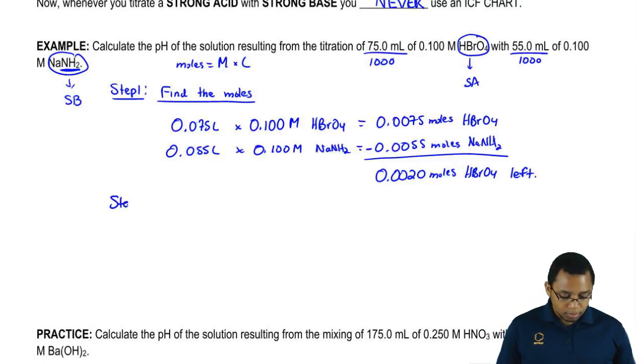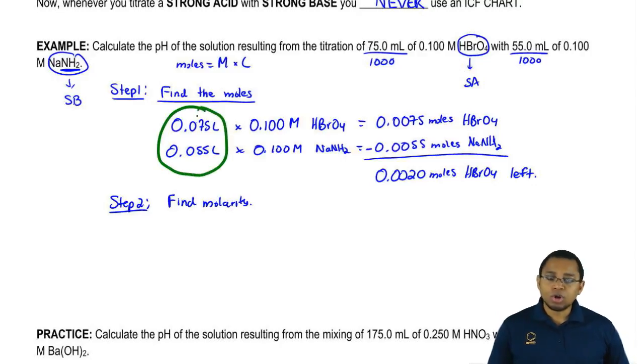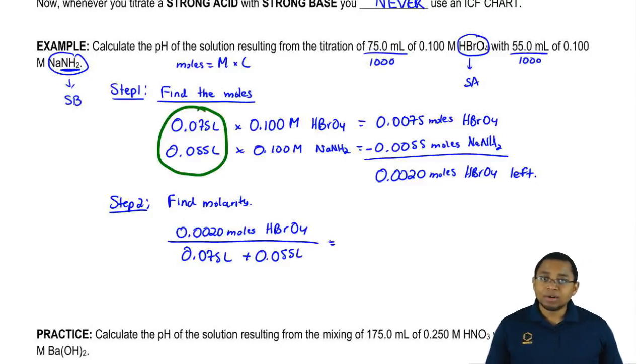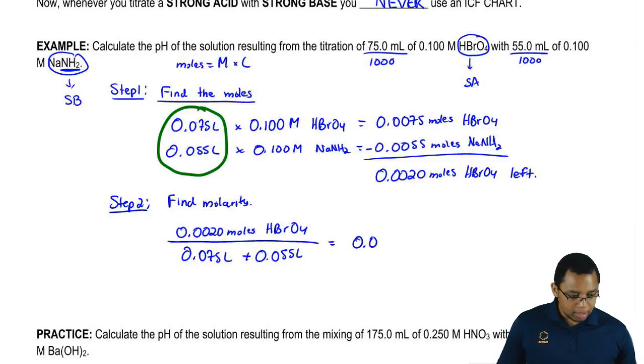Now step two, you're going to find molarity of whatever you have left. How do we find molarity? Well, we're going to take the moles that we just found and divide them by the total volume. Those two liters added up together will give me my total volume. We're going to say 0.0020 moles of HBrO4 divided by the total volume we used, 0.075 liters plus 0.055 liters. When we divide those together, that's going to give me 0.0154 molar HBrO4.